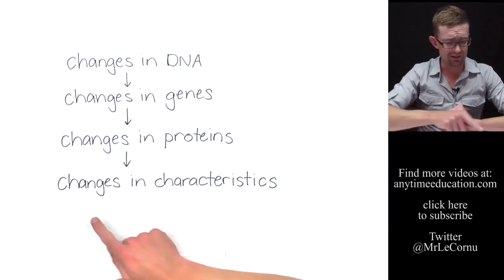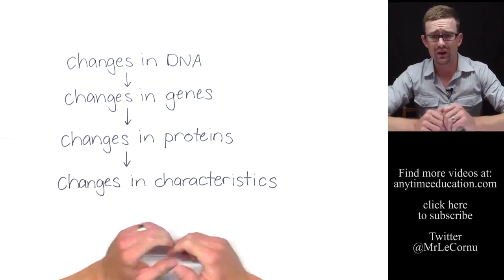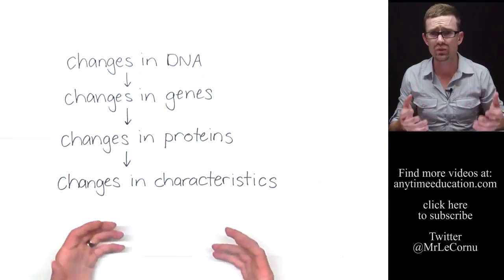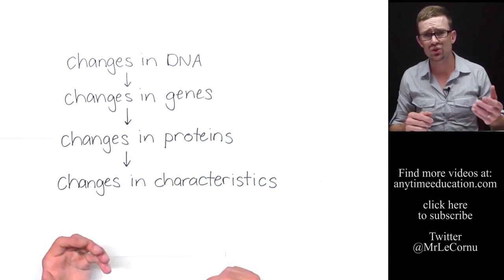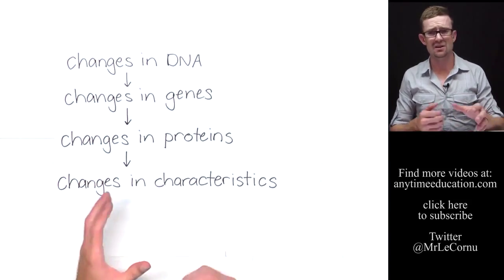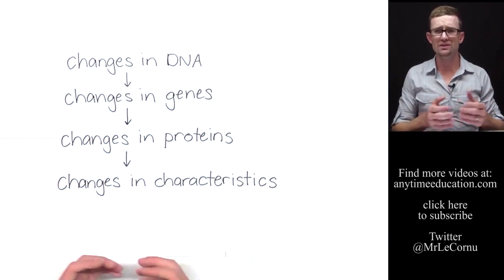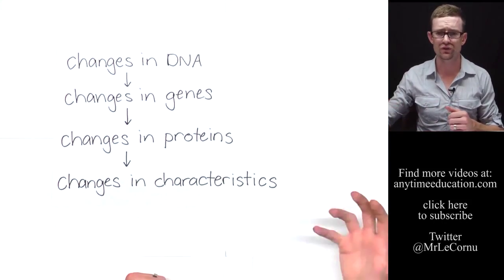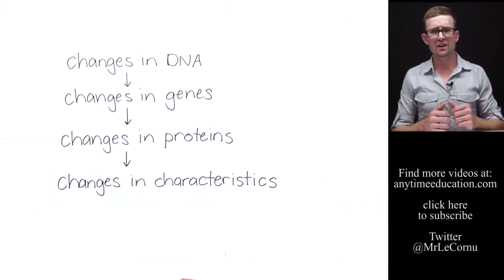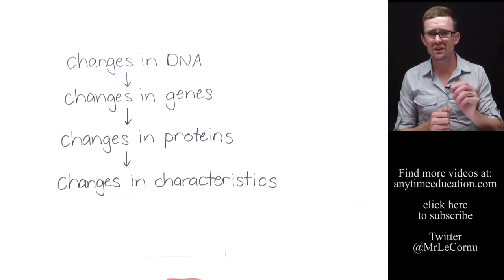Now something to bear in mind is these changes in characteristics are usually harmful. The reason for that is because you're causing changes to this process, which is a process that's already working. If you change something that's already working, that's usually not going to be a good thing. Right? Think about the cake example. I brought in the recipe. Most of the changes that I was making would cause negative effects on the cake. If you cooked it for too long, it's going to be burnt. If you added an extra egg, that's not going to be quite right. If you added too much flour, it's not going to taste right.